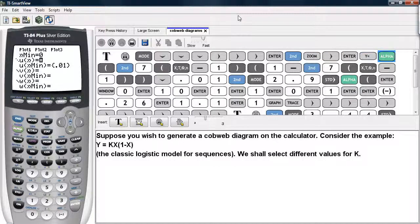Then we hit y equals and we type in our function for un, for our sequence generator. Now, in order to get to the little u that you see here, you hit second and seven. That brings up that little u right there.